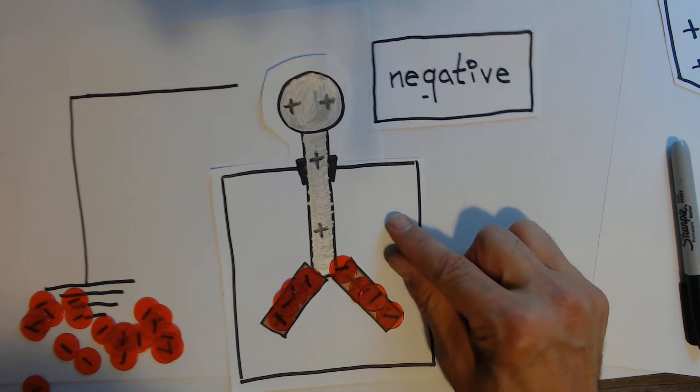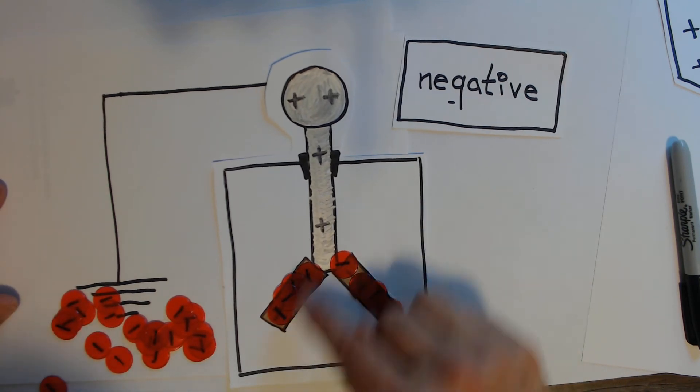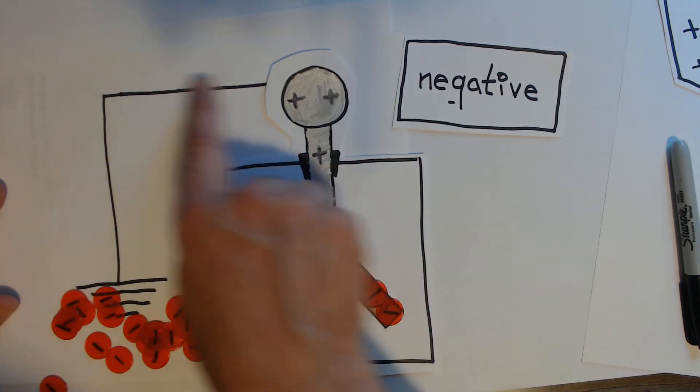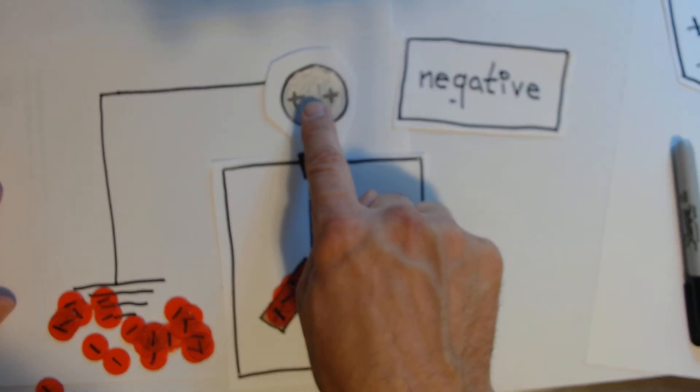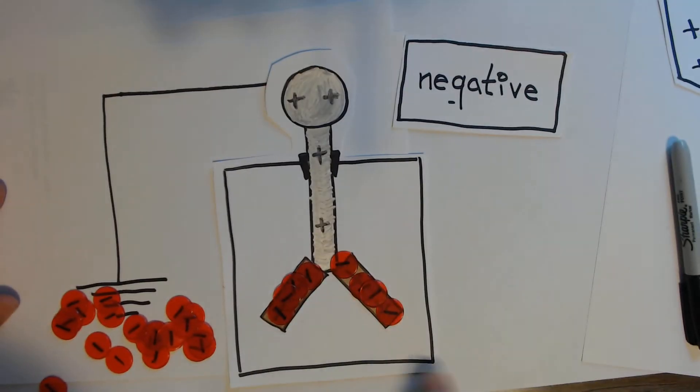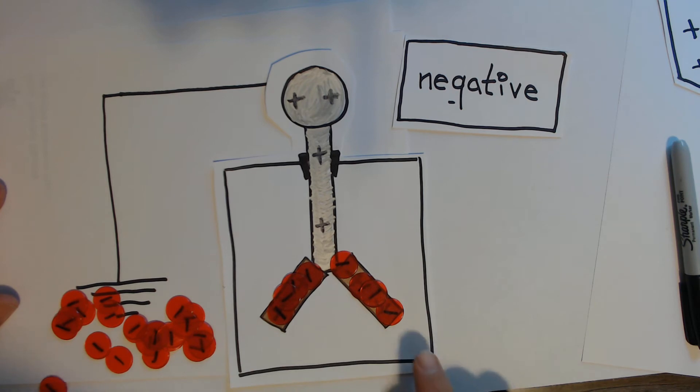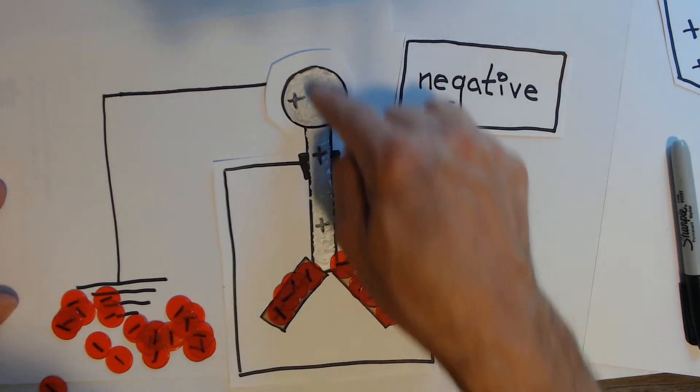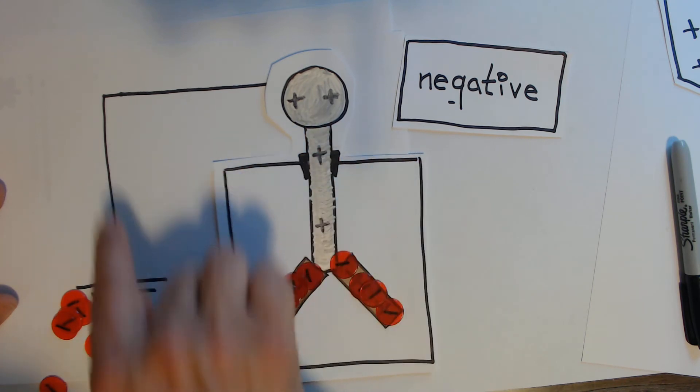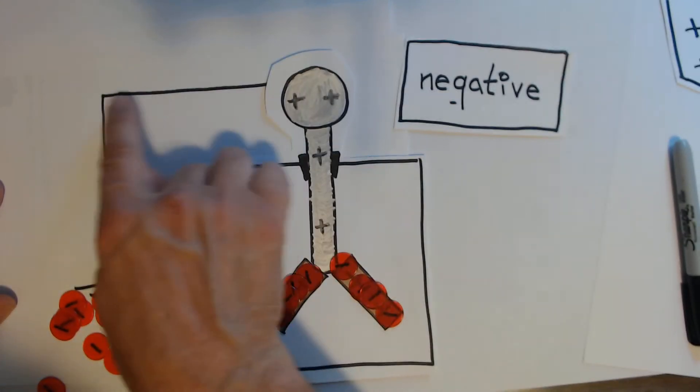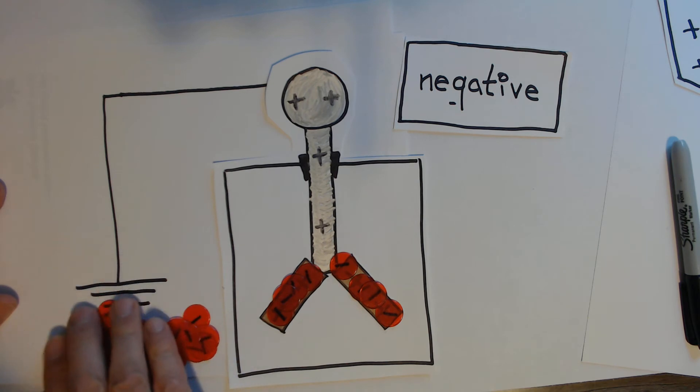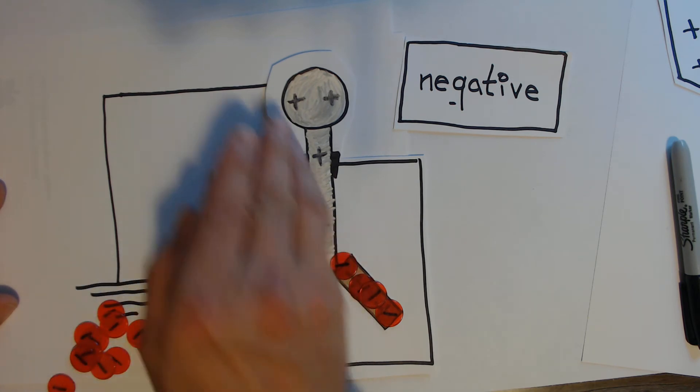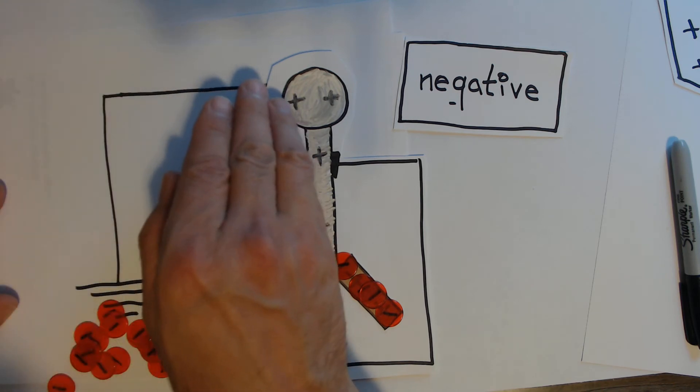Then what you do, you ground the electroscope, you ground it by touching the ball at the top. Now it's not grounded normally, even though it's sitting on a table, because this rubber insulator keeps it. So this is essentially floating in an insulator. So when I touch it to a conductor that attaches to ground, there's an infinite number of electrons in ground that things can go to or come from.